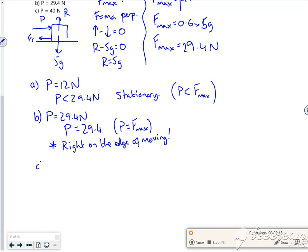And then for C, if P is 40 newtons, then P is greater than the 29.4, so P is greater than F max. And it's moving.